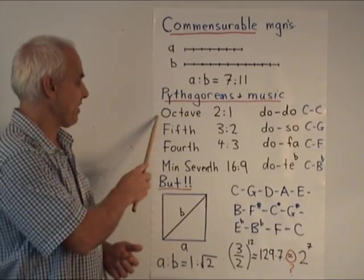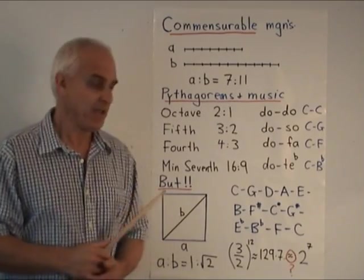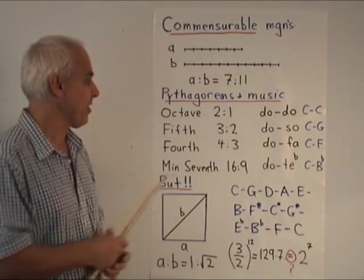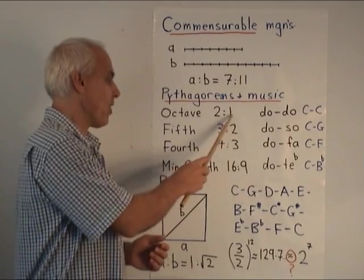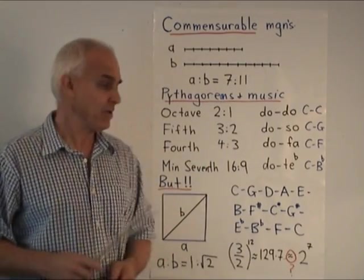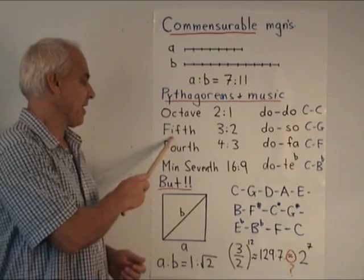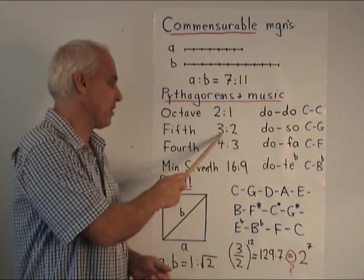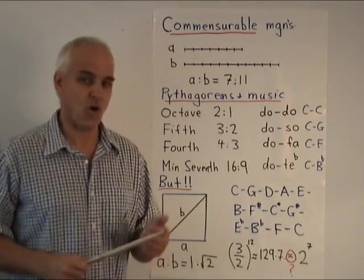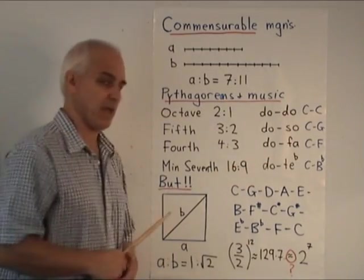So for example, if you have two notes, then they are separated by what we call an octave if the guitar strings that are used to generate them are in the ratio two to one or the proportion two to one. So that's like DO DO from C to C. A perfect fifth is corresponding to the proportion three to two. That's like DO to SO. DO RE MI FA SO, DO SO, that's a perfect fifth, corresponds to C to G on the piano.